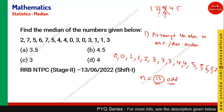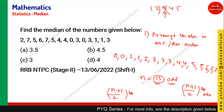Since n is odd, we take the (n+1)/2-th observation. For n=5: (5+1)/2 = 3rd observation, which is the median. Coming to this question, n is 15, which is odd. So the median will be the (n+1)/2-th observation: (15+1)/2 = 8th observation. Counting to the 8th element gives us 3. So option C is the right answer.